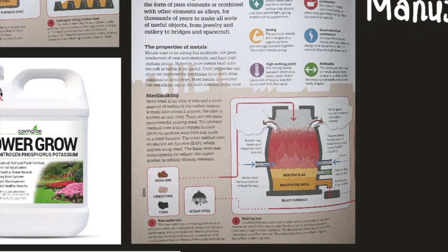Metals are good electrical conductors because electrons in metals can carry electrical charge and move freely — electric currents flow through them easily. Metals are malleable. The molecular structure of metals allows layers of atoms to slide so that the metal is malleable and can be easily shaped. So the properties of metals: they tend to be strong but malleable, good conductors of heat and electricity, and have high melting points.